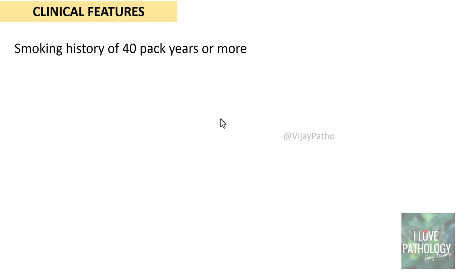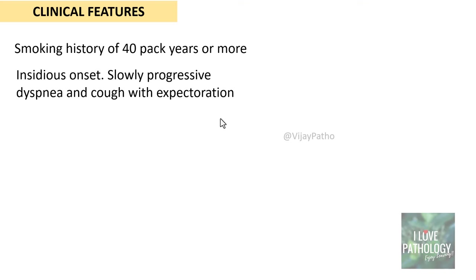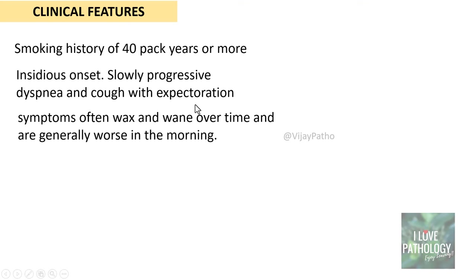Most often these patients have a smoking history of 40 pack-years or more. That means the individual might have smoked one pack of cigarettes per day for 40 years — a very long duration of smoking history. Usually there is insidious onset with very slowly progressive dyspnea and cough with expectoration.